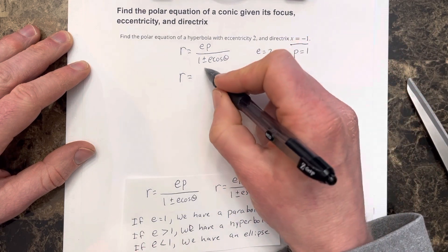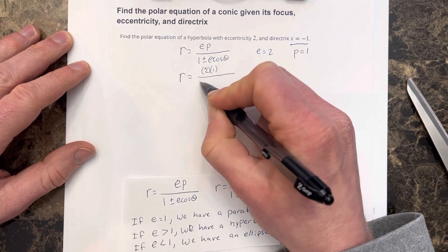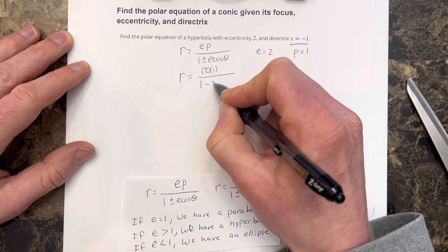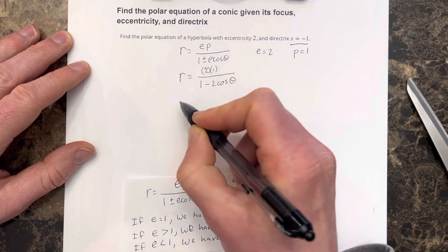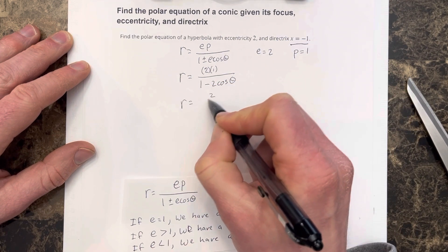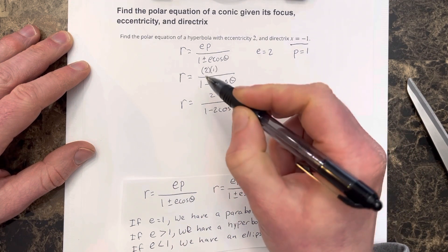So we have ep, so 2 times p, which is 1, over 1 minus 2 cosine theta. So we end up with r is equal to 2 over 1 minus 2 cosine theta for our equation.